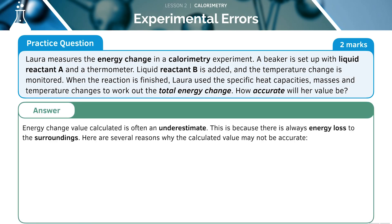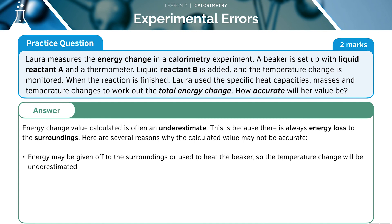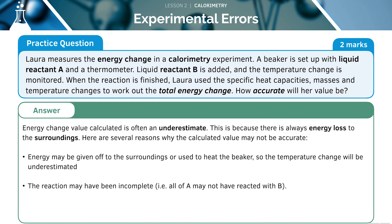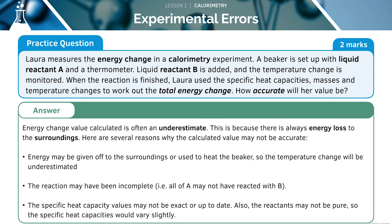The AQA specification doesn't ask you to know this next part, but it often comes up in calorimetry questions. Energy changes that we calculate are often underestimates, since there is always energy loss to the surroundings. Reasons why the calculated value may not be accurate include: energy given off to the surroundings or used to heat the beaker; the reaction may have been incomplete; the specific heat capacity used may not have been accurate; or the reactants may have been impure.